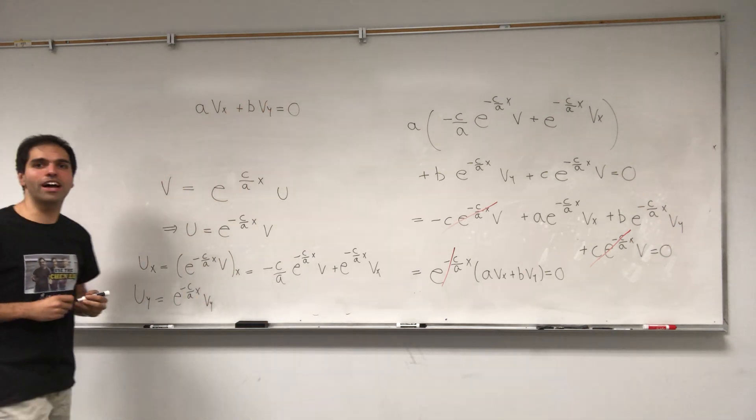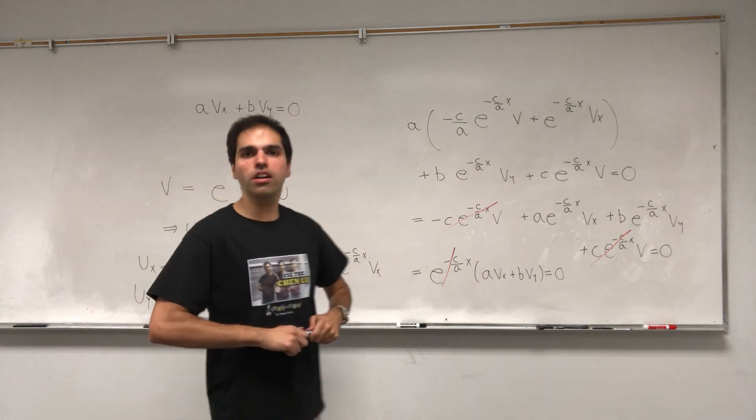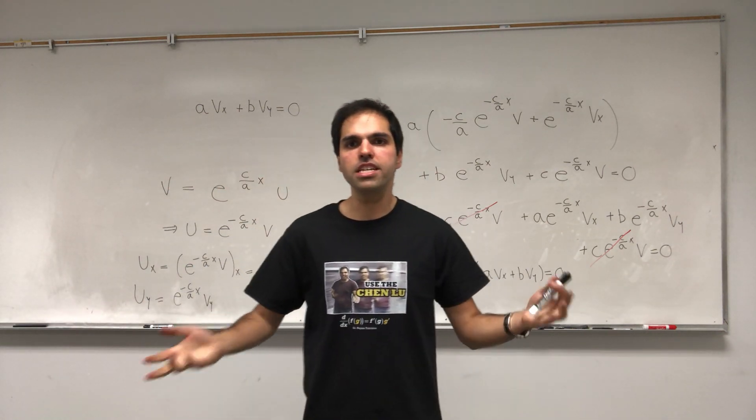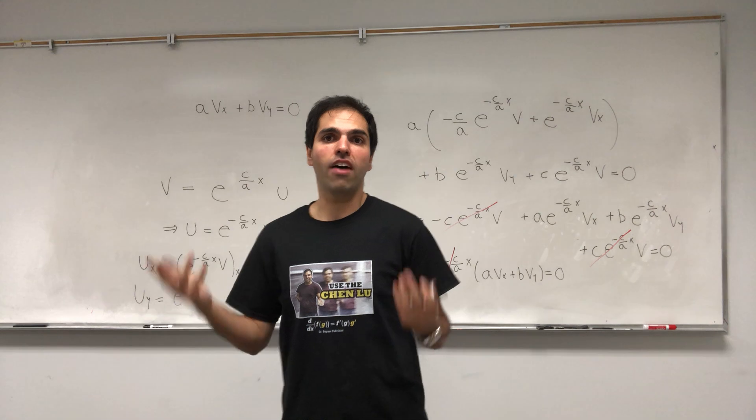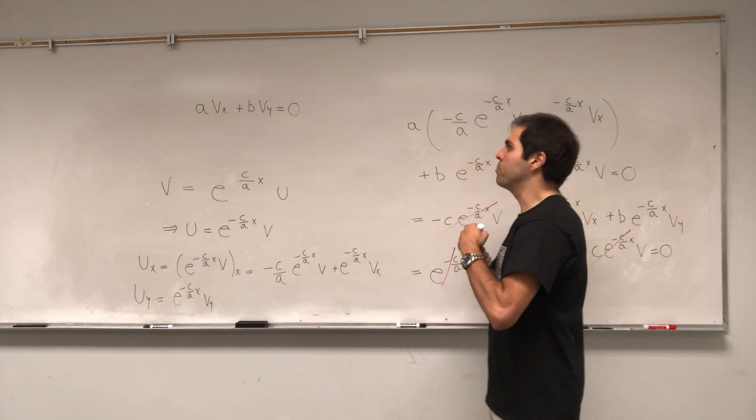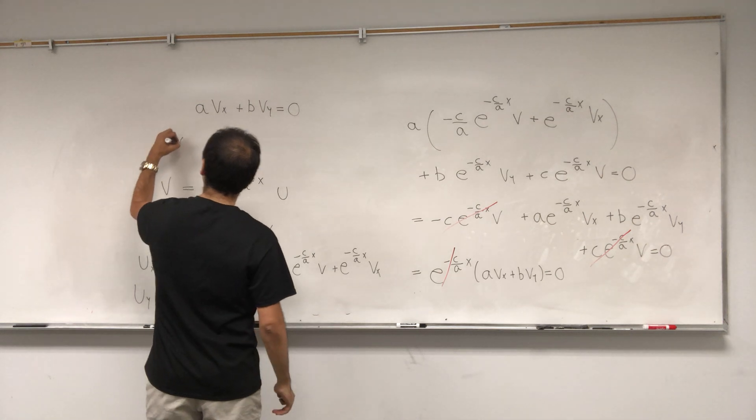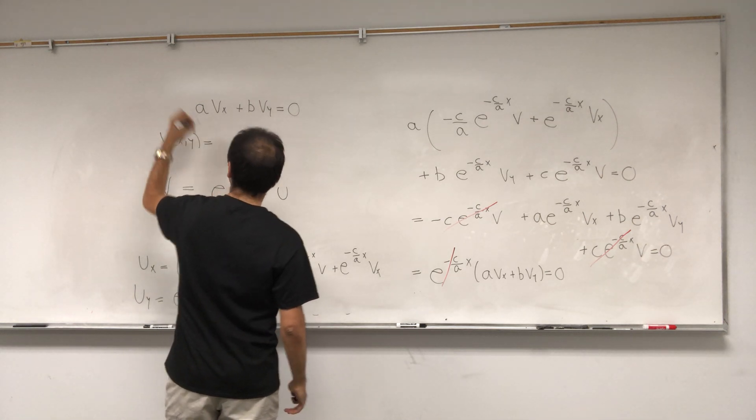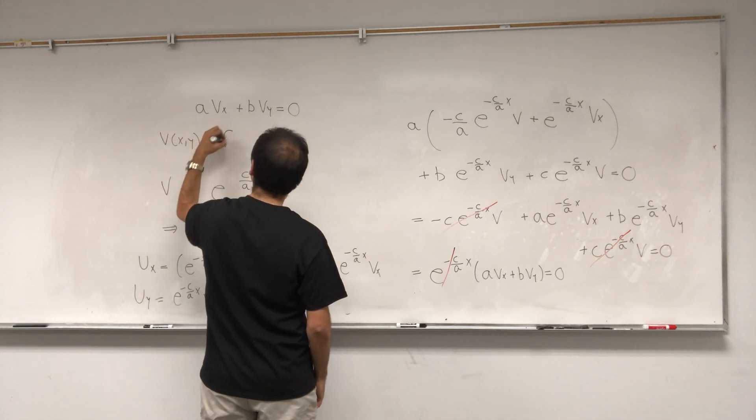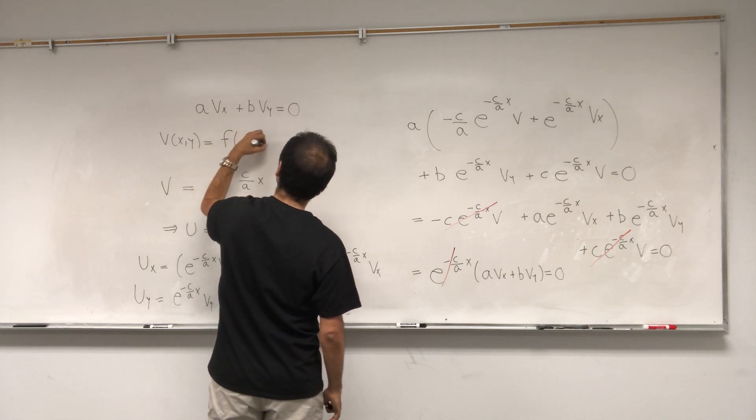we just have our simple first order constant coefficient equation. So we're left with AVX plus BVY equals 0. And that's the whole point of transform methods, to take a very complicated PDE and simplify it so it becomes a solvable PDE. And what's the solution of this? So VXY, it's ILMAO, so F of AY minus BX.